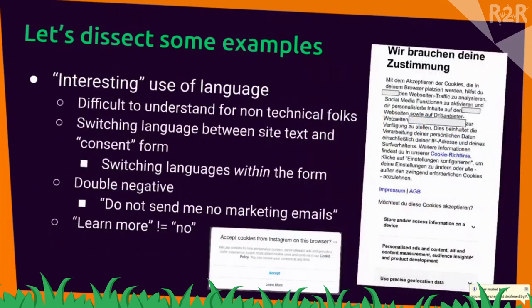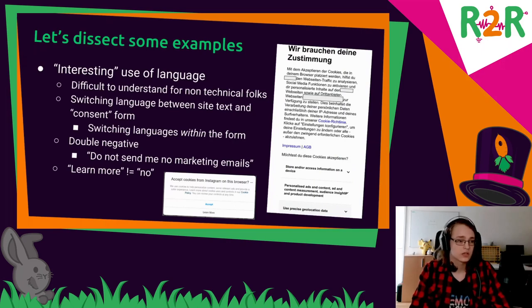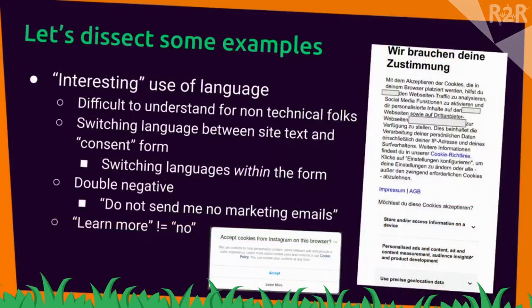Another dark pattern is interesting use of language: difficult to understand language for non-technical folks, or switching languages between the site text and the consent form — it's common for a site to be in German but the consent form is in English. There's also the double negative: 'do not send me no marketing email,' so you have to think carefully about what you're saying when you tick that checkbox. And 'learn more' does not equal 'no' — on most sites you have to click 'learn more' to eventually say no, which doesn't make much sense.